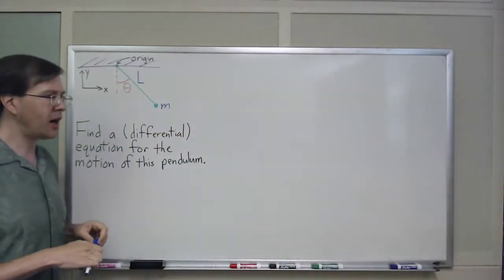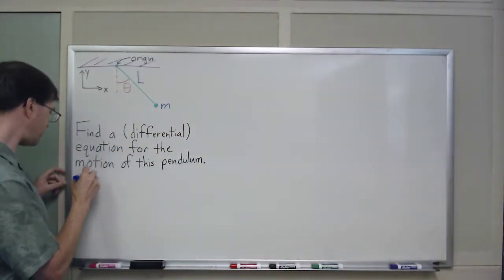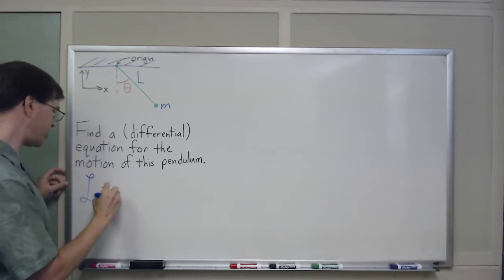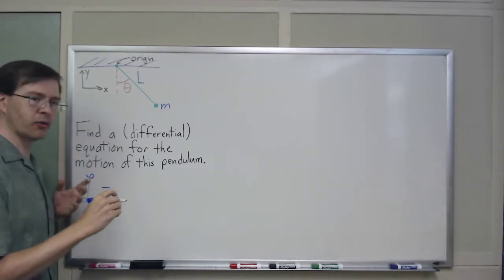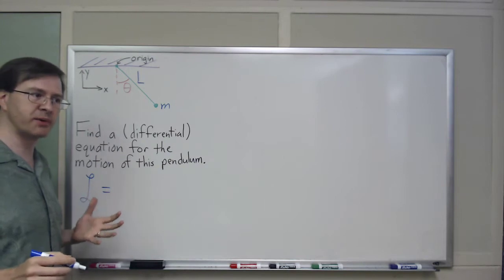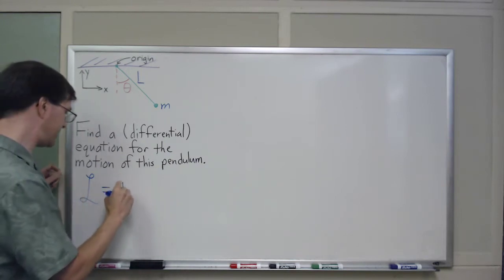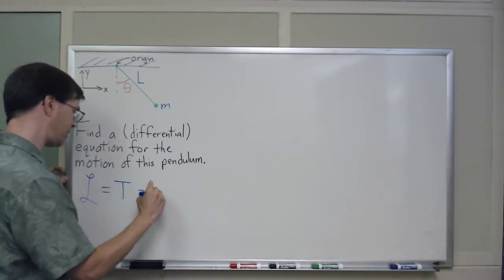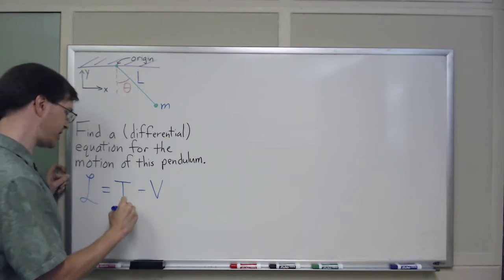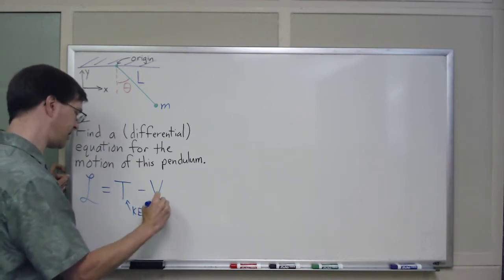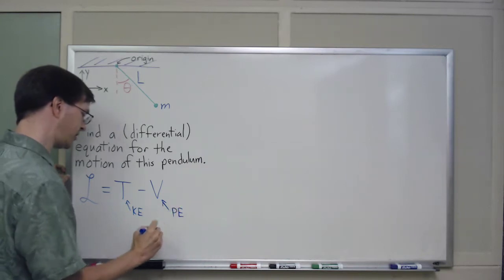Lagrangian mechanics, as you may know, is the idea that we define a Lagrangian, which traditionally is written as, I'm going to write it in the usual notation that advanced mechanics books use, T minus V.